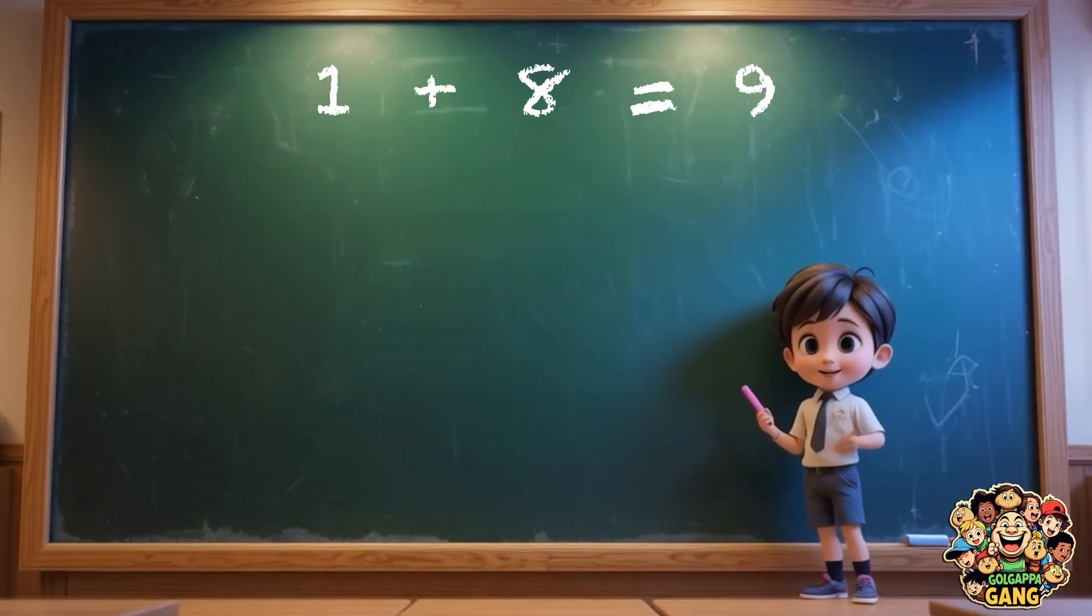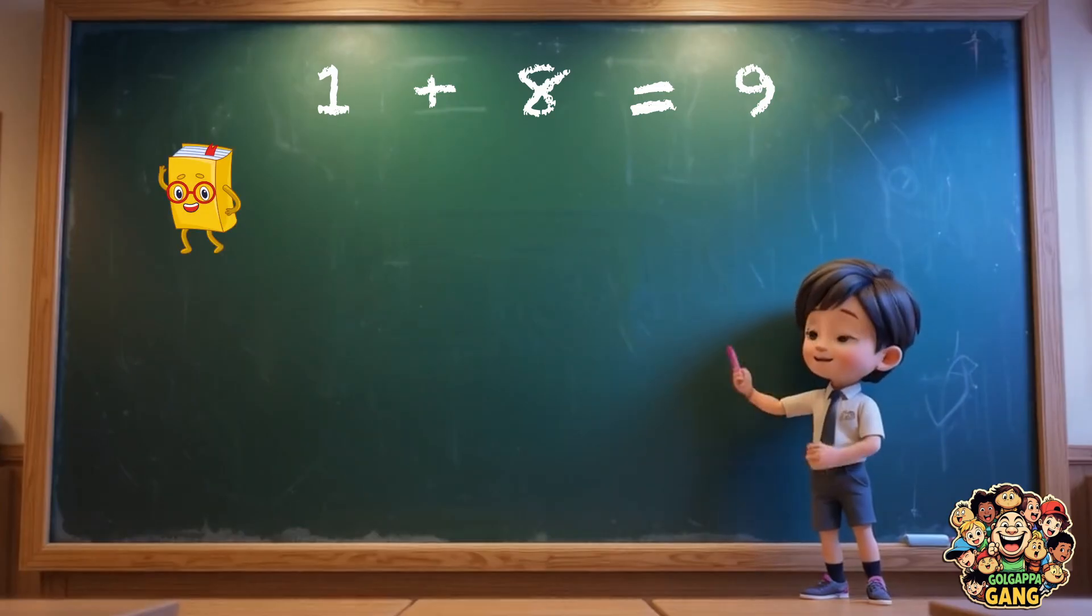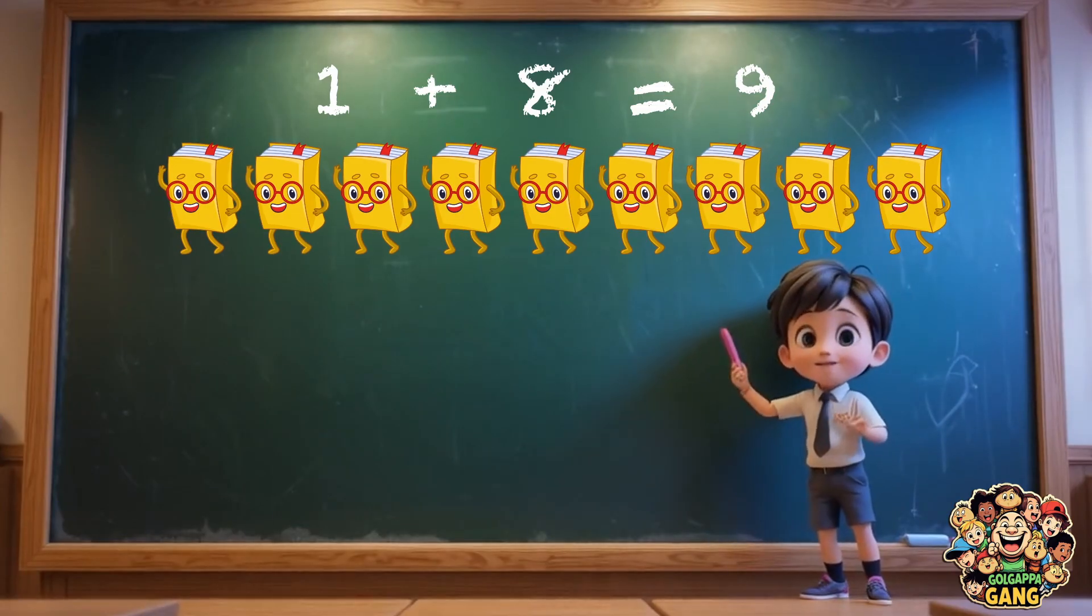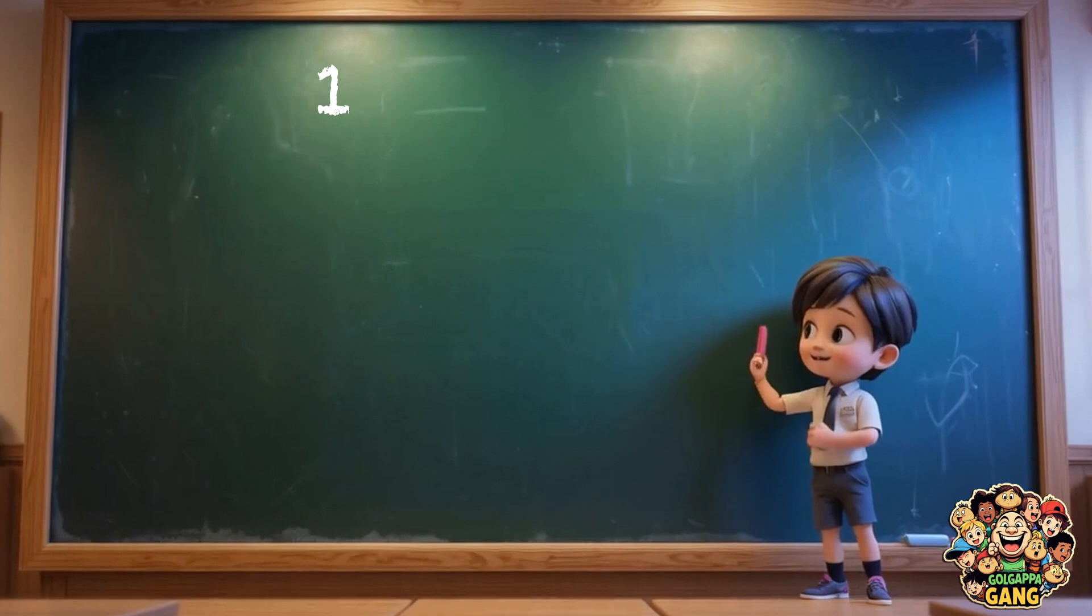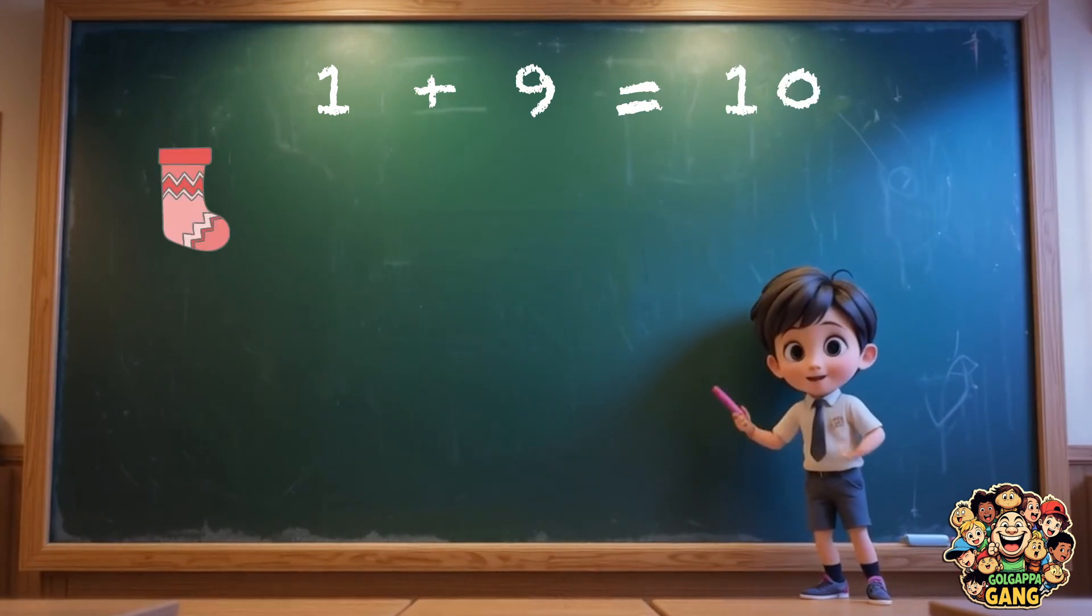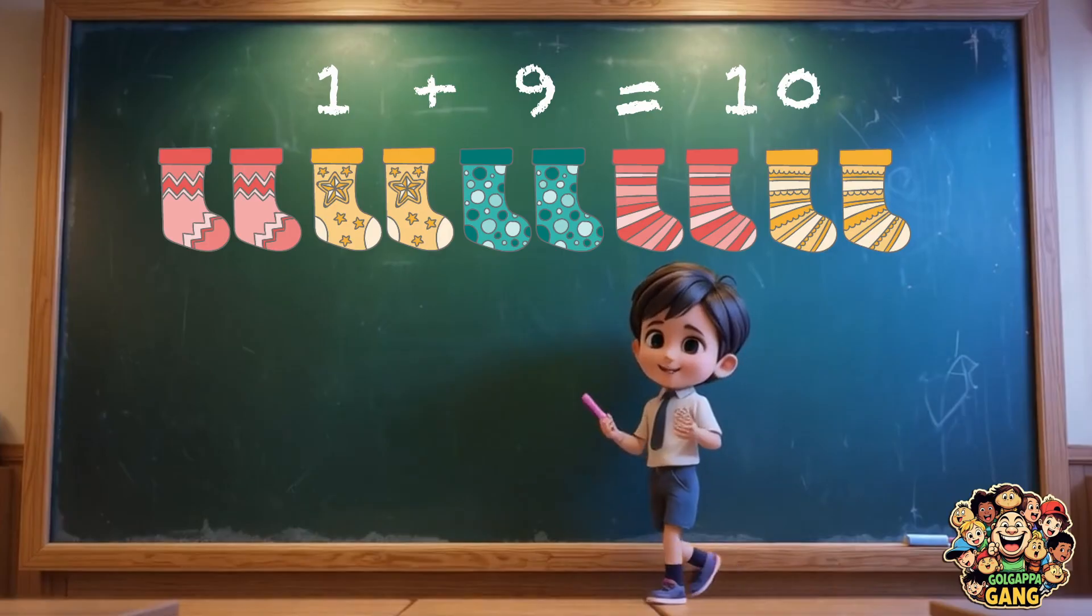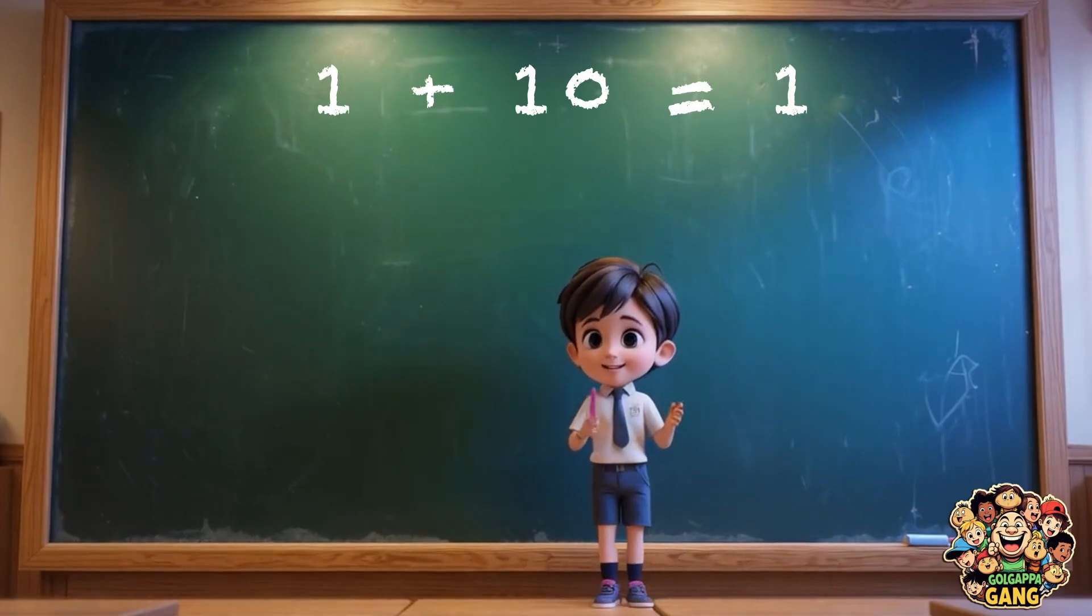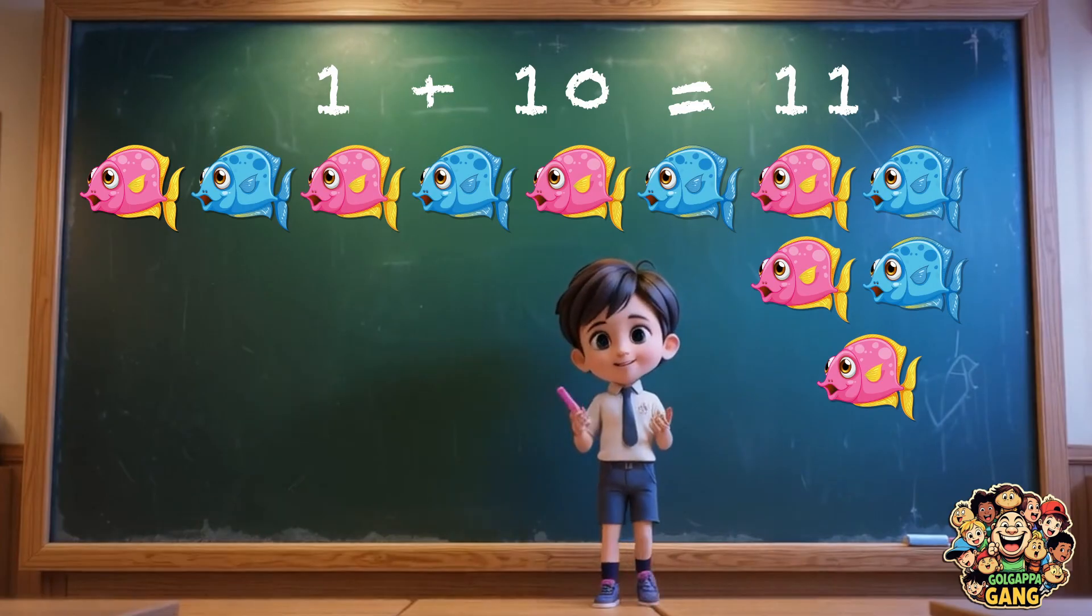One plus eight equals nine. Like, one book plus eight books equals nine books. One plus nine equals ten. Like, one sock plus nine socks equals ten socks. One plus ten equals eleven. Like, one fish plus ten fish equals eleven fish.